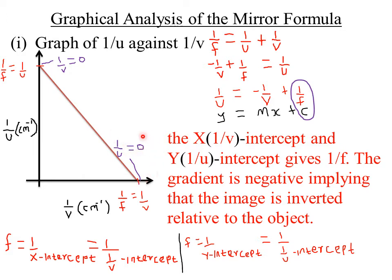So if at the x-intercept 1/u is equal to 0, and I substitute 0 into the mirror formula, then I'll have 1/f = 1/v. At this particular point, 1/f is equal to 1/v because 1/u is 0. So 0 plus 1/v simply gives 1/v, therefore 1/f = 1/v at the x-intercept.